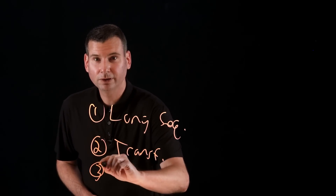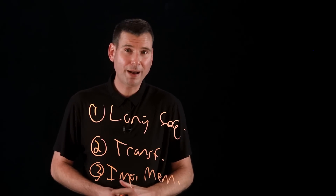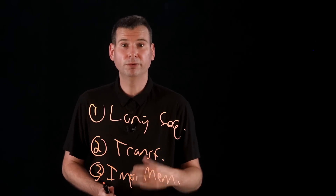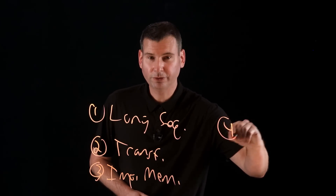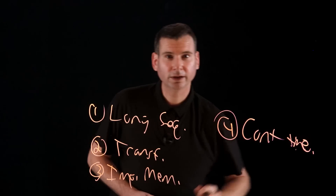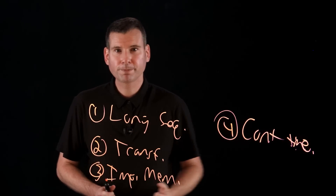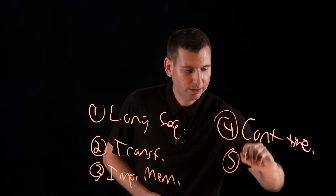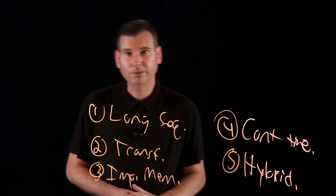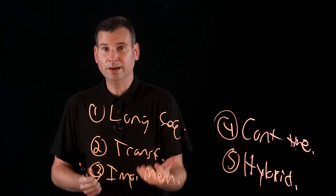SSMs have an implicit memory structure — they don't store all past tokens explicitly, but instead store them within those state equations we showed before. There's also a continuous time element, where SSMs use continuous signals to model sequences. And finally, we might combine SSMs with transformers, which removes a lot of the bottlenecks in these neural network architectures. We can think of it like this: AI transformers remember everything, whereas a state-space model remembers only what really matters.